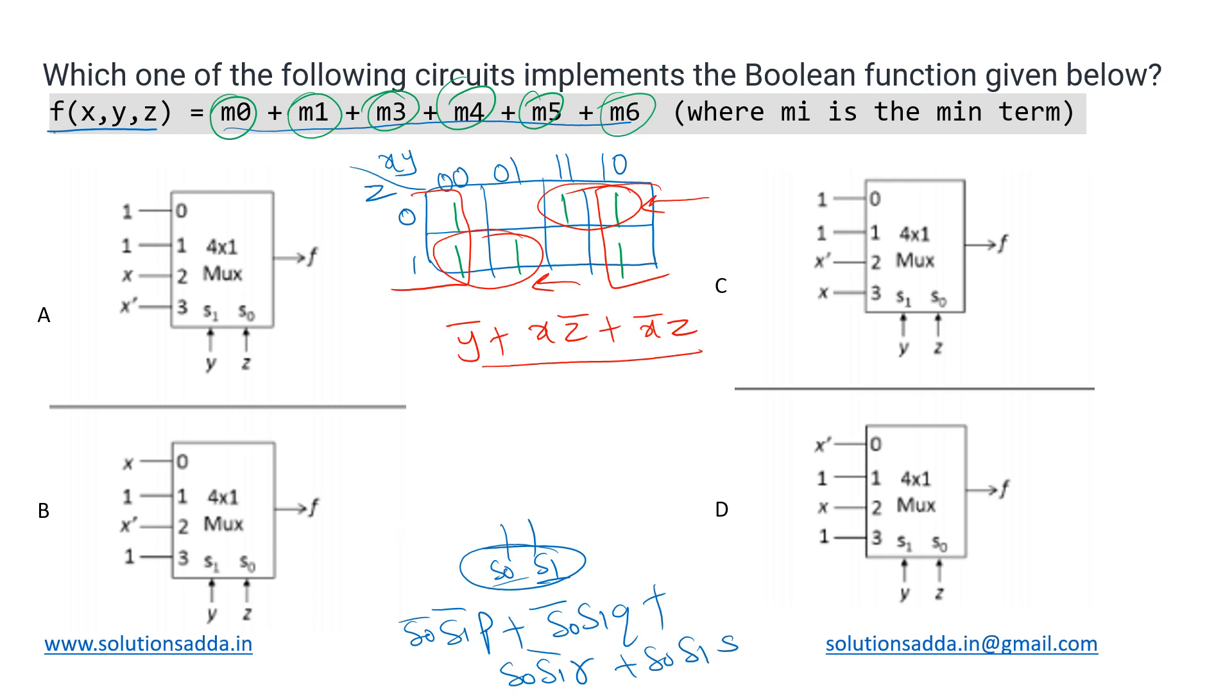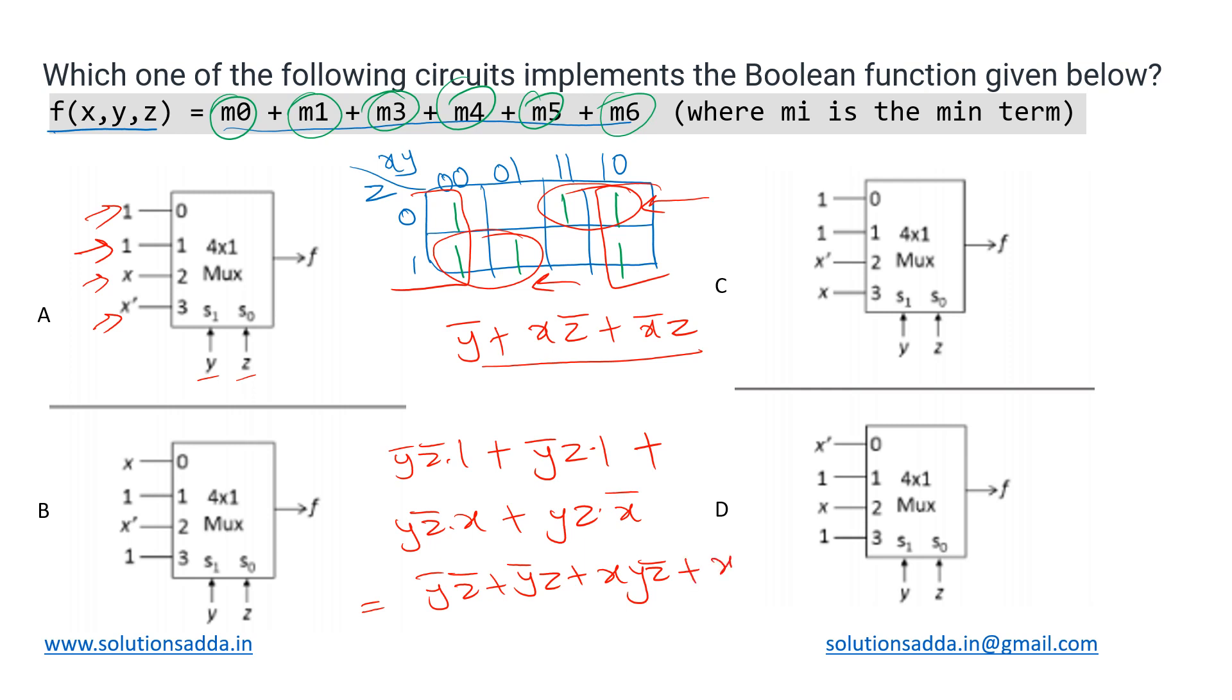Now looking at option A, its signal bits are y and z. So the output will be evaluated as ȳz̅ times the first input which is 1, plus ȳz times the second input which is 1 again, plus yz̅ times the third input which is x, plus yz times the last input which is x̅. Let us simplify this. It is ȳz̅ + ȳz + xyz̅ + x̅yz.